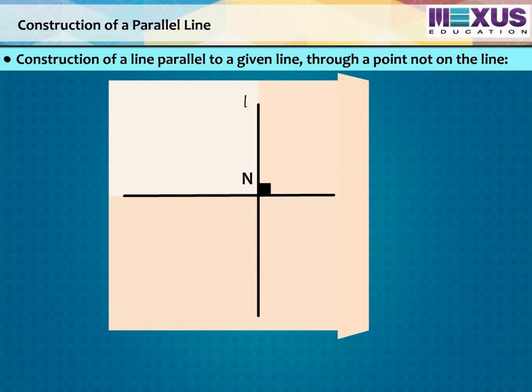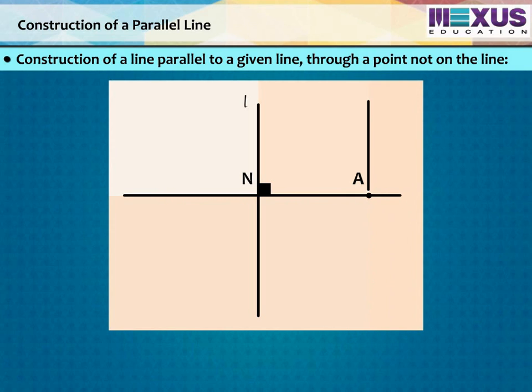Next, make a fold perpendicular to line AN and name this new line as M. Now we see that line M is parallel to line L.